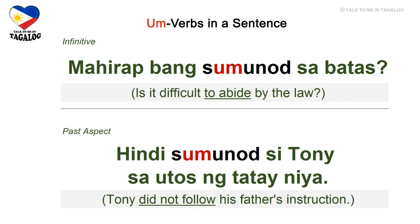Past aspect: hindi sumunod si Tony sa utos ng tatay niya. Hindi means not or did not, sumunod means followed, utos means order or instruction, tatay means father, and niya means his — Tony did not follow his father's instruction.